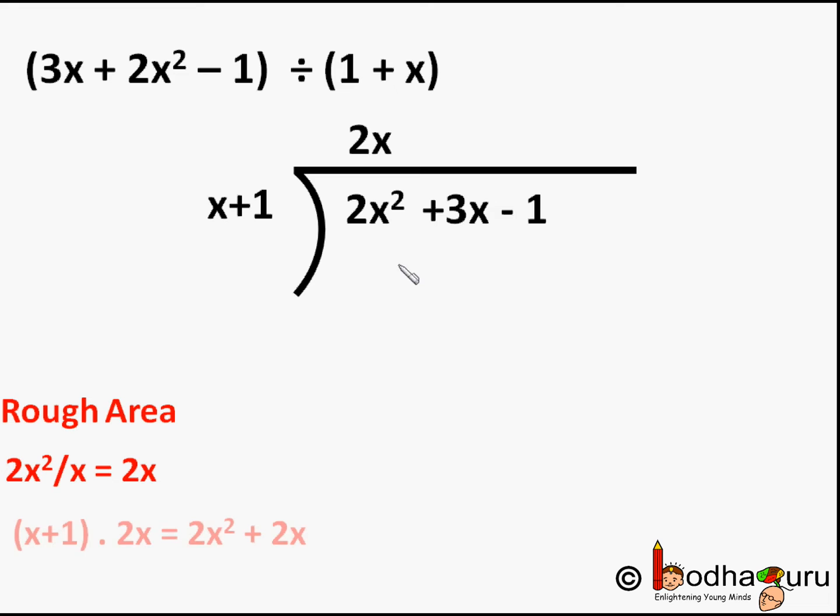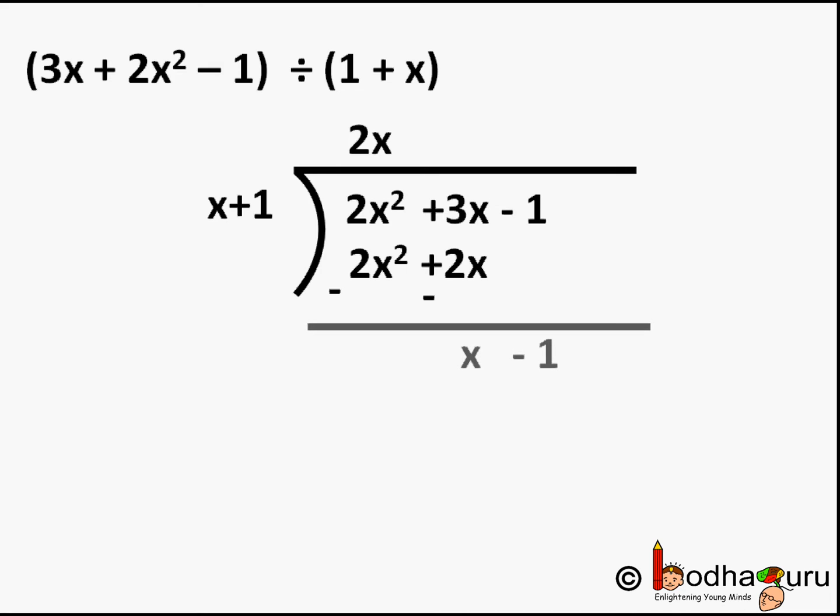Now we multiply divisor x + 1 by the quotient we found just now, which is 2x. So (x + 1) × 2x, we get 2x² + 2x, which we write below the dividend. Now we subtract, just like we do in normal division, so the signs will change in the second polynomial. It will become -2x² - 2x.